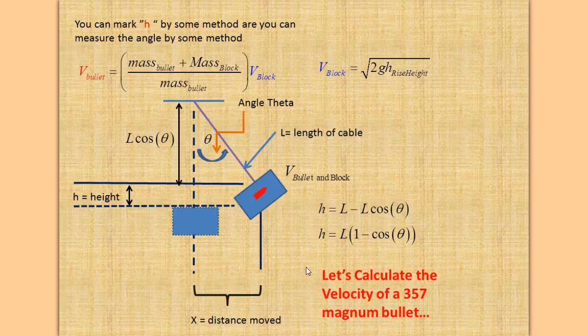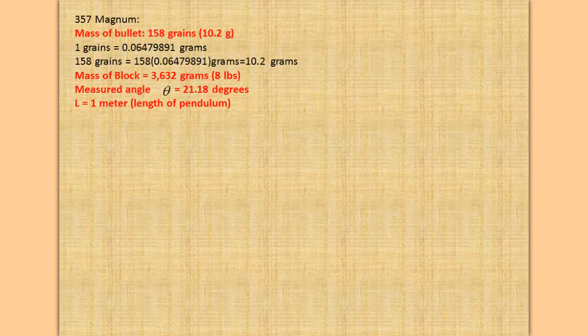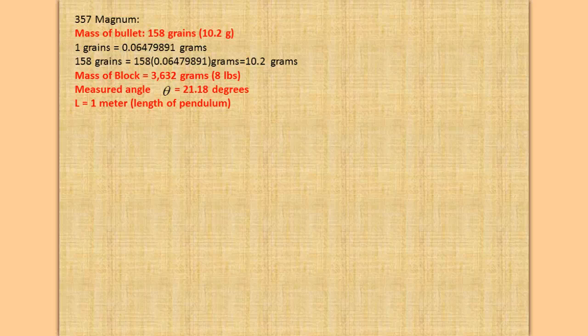Let's calculate the velocity of a .357 magnum bullet. A .357 magnum bullet is the same diameter as a .38 bullet. The mass of the bullet is 158 grains or 10.2 grams — one grain equals 0.06479891 grams. Multiplying 158 by that conversion gives 10.2 grams. Note: a .357 bullet fired in a .38 gun can blow it up due to much higher pressures, a stress called hoop stress that the .38 cannot handle.